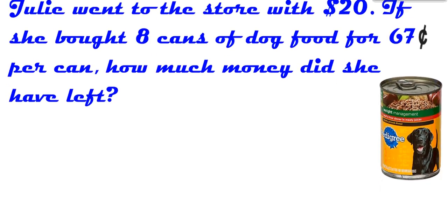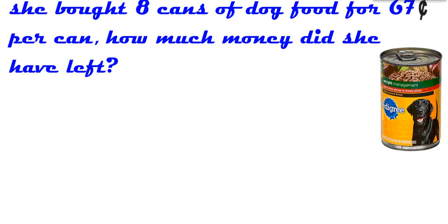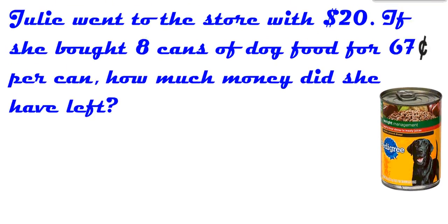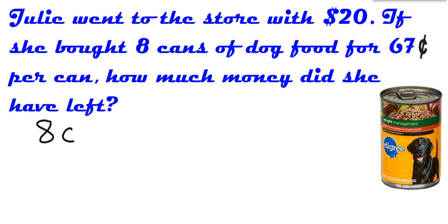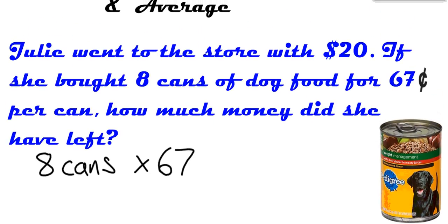All right, well, first we've got to start with that simple concept of understanding how much money did she spend to begin with. So we know there were eight cans, and then of course the $0.67 each. So we'll multiply by $0.67. Now, it's probably a good idea that we work with the same kind of labels, right? This is cents and this is dollars. So let's convert that $0.67 into dollars by throwing a little decimal in front of it just like that.